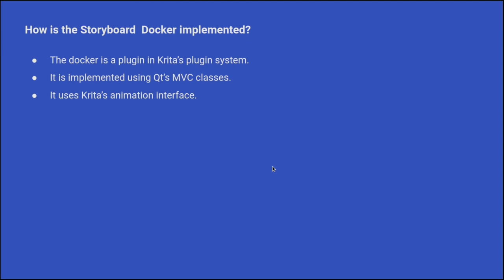It takes a list of keyframes that exist in the timeline docker and provides an interface to add some extra data for those frames. Also, thumbnails for all the frames in the storyboard docker are visible at the same time.